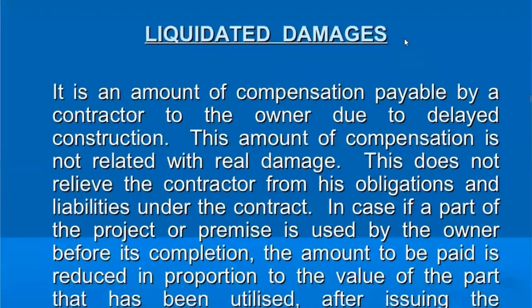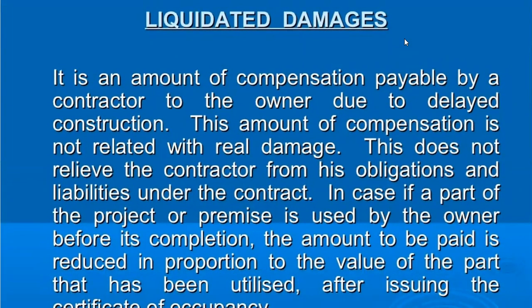What happens in liquidated damages? It means there is an amount of compensation. The amount of money will be paid because of a delay — the construction was delayed, the time was delayed. What happens to the amount of compensation? The contractor and owner need to give the amount of compensation. The amount of compensation is not related to real damage — it is just that there was a delay or a problem, and a pre-agreed amount has to be given.